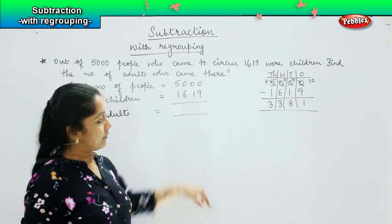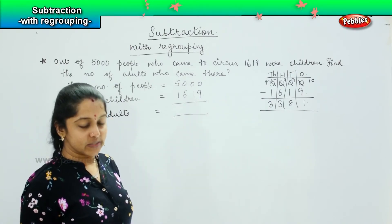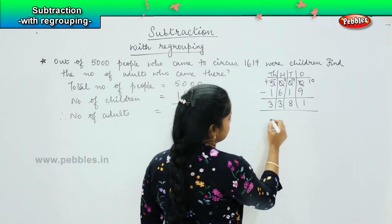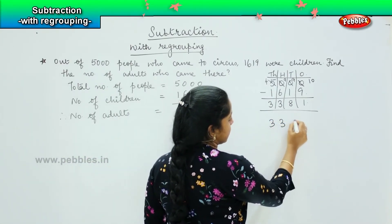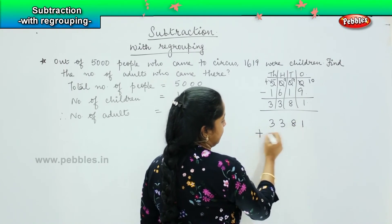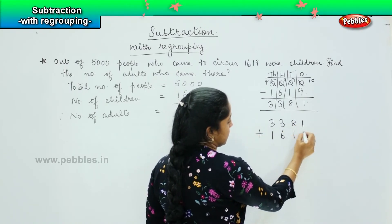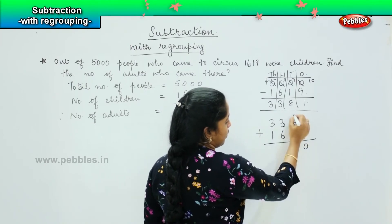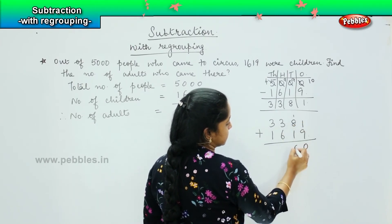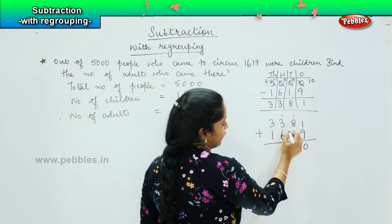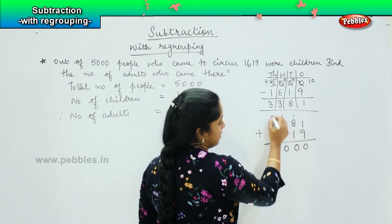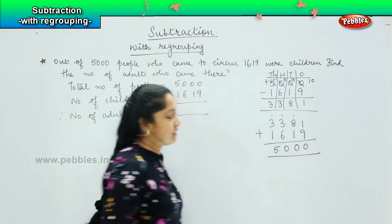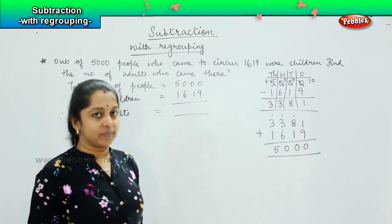Shall we add it and see whether our answer is right or wrong? Let's check: 3381 plus 1619 — 1 plus 9 is 10, carry 1; 1 plus 8 is 9, plus 1 is 10, carry 1; 3 plus 6 is 9, plus 1 is 10, carry 1; 3 plus 1 is 4, plus 1 is 5. So, my answer is correct.